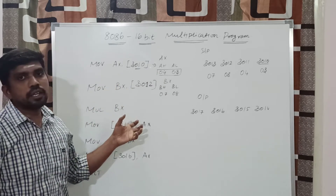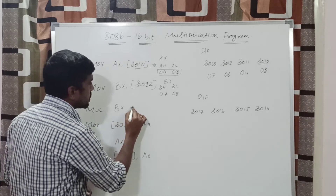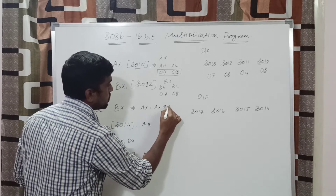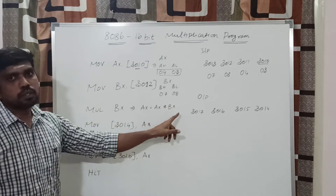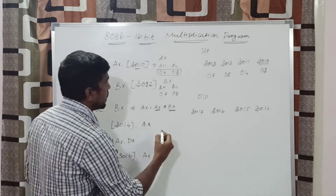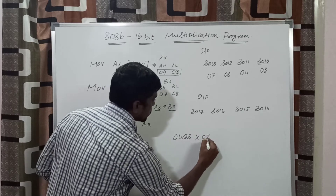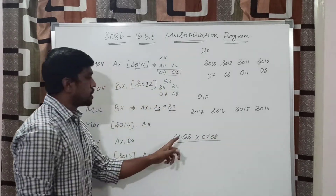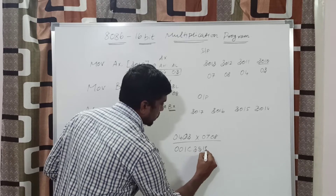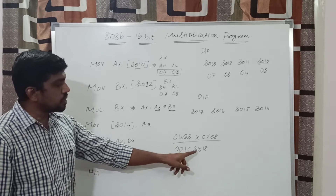The third instruction declares the operation. In this program, we are using the multiplication function. You write MUL BX. This instruction performs the operation AX = AX × BX — multiplying the two 16-bit contents, one from the AX register and another from the BX register. The AX value is 0403 and BX is 0708. After multiplication of these hexadecimal values, you get the result 1C3518.